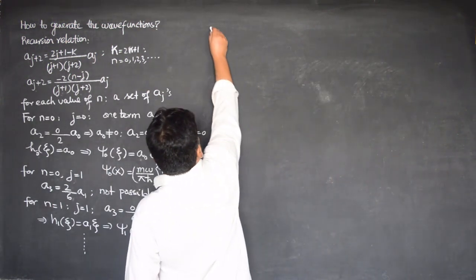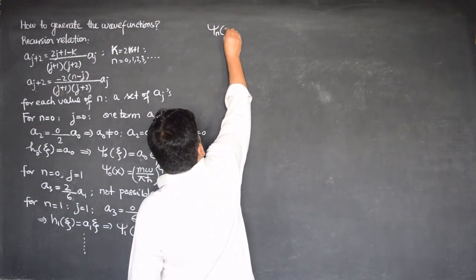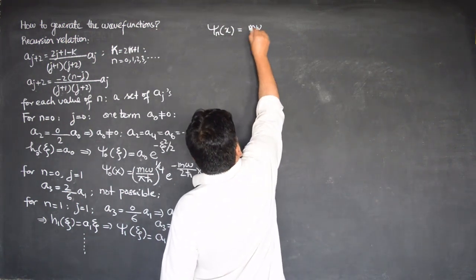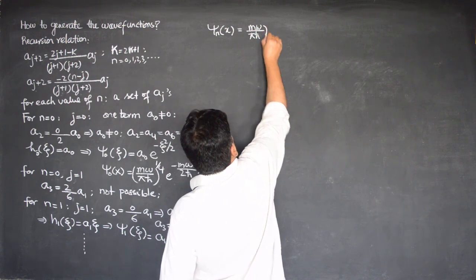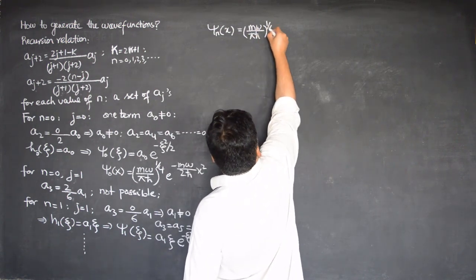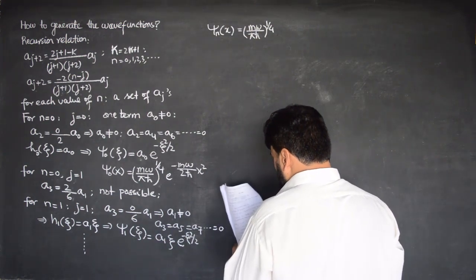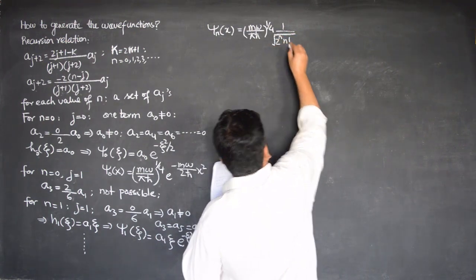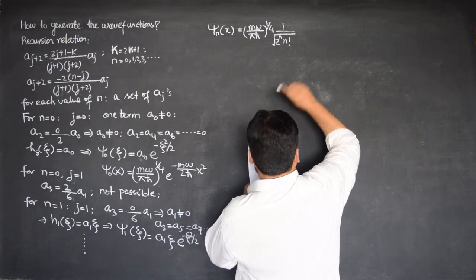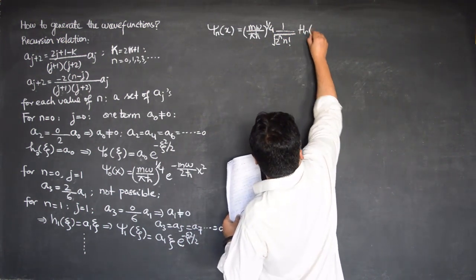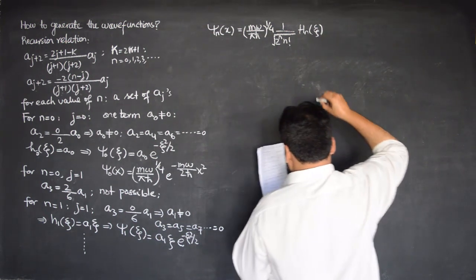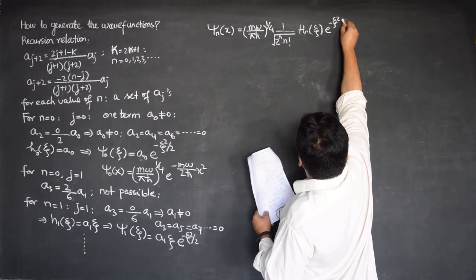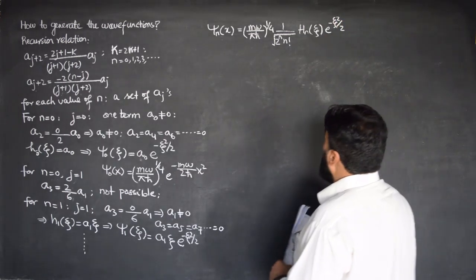The generalized form of ψ_n of x is (mω/πℏ)^(1/4) times 1 over sqrt(2^n n!) times H_n, the Hermite polynomials of ξ, times e to the power minus ξ squared by 2, where we know the value of ξ.